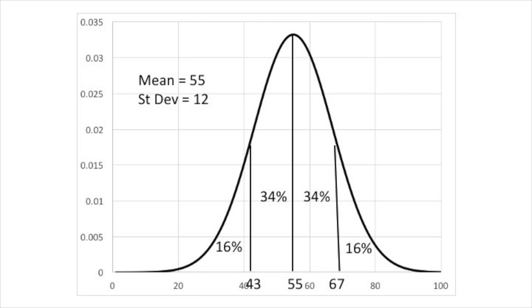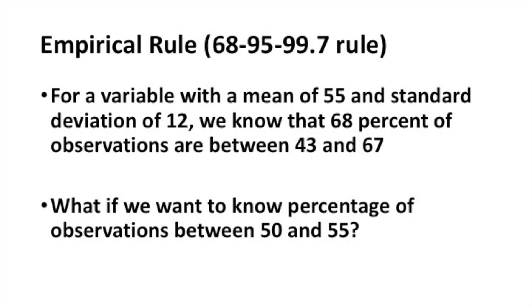Here's an example. If you have a mean of 55 and a standard deviation of 12, we know that 34% of the distribution is between 43 and 55. Another 34% is between 55 and 67. Combine those two and you have 68% falling within one standard deviation of the mean, which is between 43 and 67.